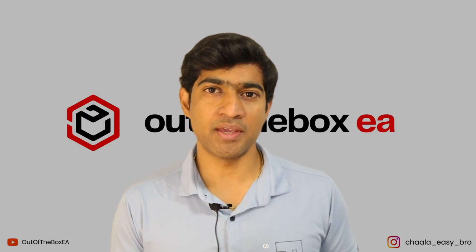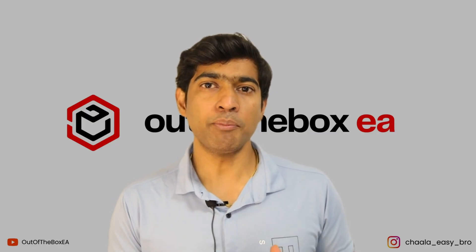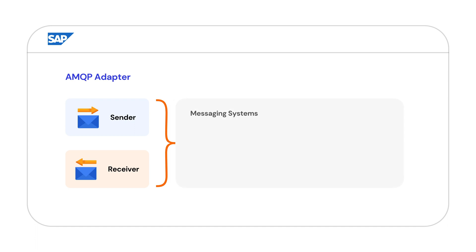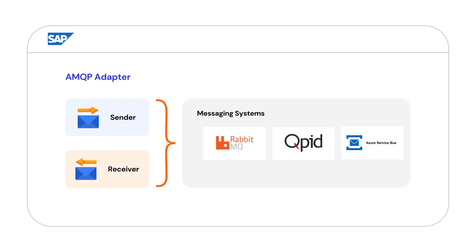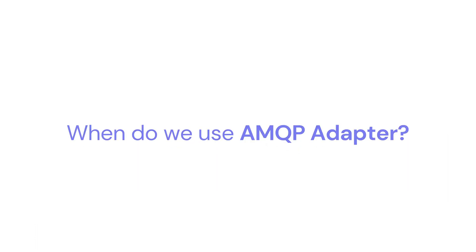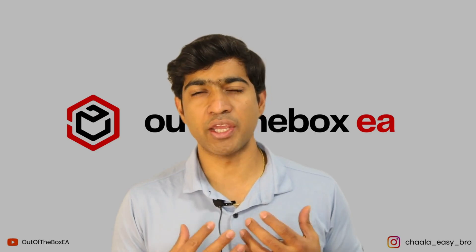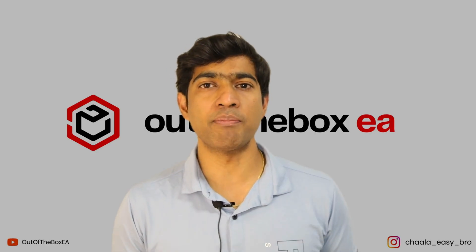In SAP CPI, AMQP adapters can be used on the sender side and receiver side. We can use the AMQP adapter to integrate systems like RabbitMQ, Apache Qpid, or Azure Service Bus.